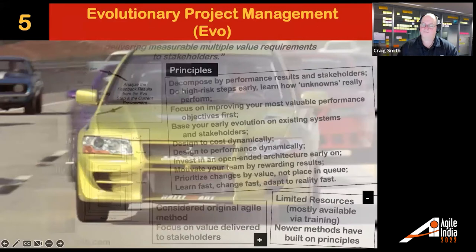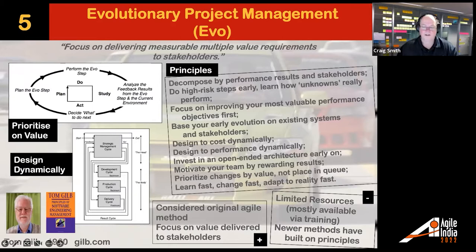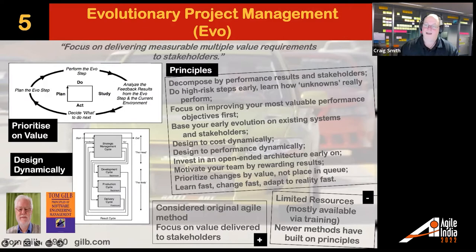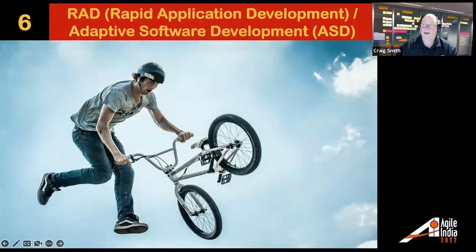EVO is probably the oldest technique, going back to Tom Gilb in the 1960s — we could consider this the start of Agile. He talked about Plan, Do, Study, Act, and had principles like breaking things down, doing high-risk things early, and open-ended architecture. Remember, this was the 1960s through the 1980s. A lot of newer methods are built on these principles. If you want to look back at how this all started, go take a look at EVO.